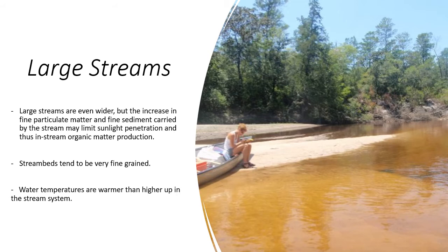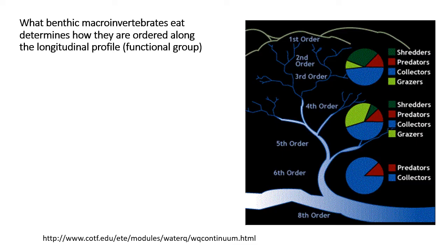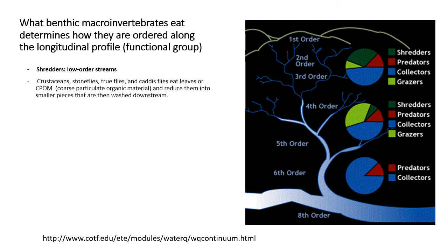As we travel downstream by canoe to deeper and usually more turbid waters, the riparian vegetation contributes less and the role of microscopic phytoplankton becomes more important. The river is exposed to more sunlight and is usually warmer than higher up in the stream system. The stream bed sediments are generally very fine grained. Throughout the length of the river, the proportion of the four major macroinvertebrate functional groups — such as shredders, collectors, grazers, and predators — changes.